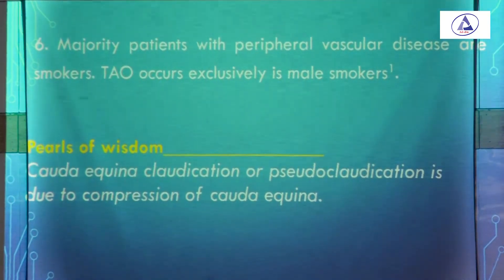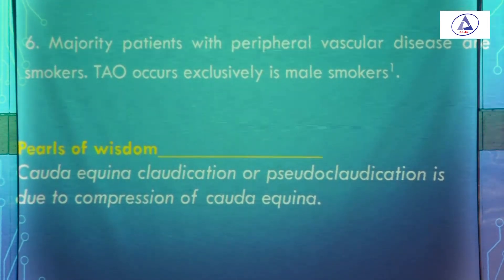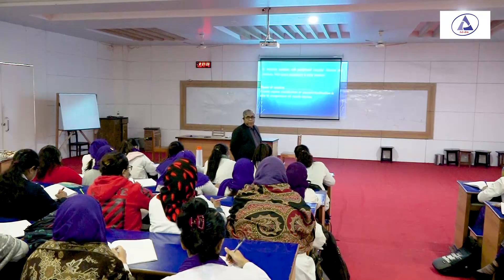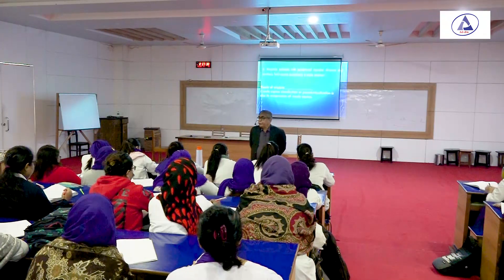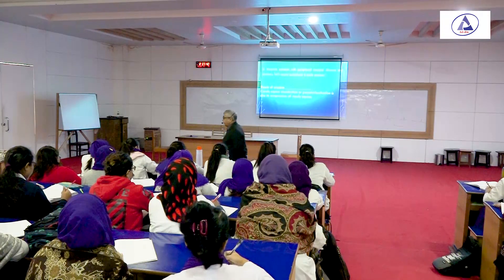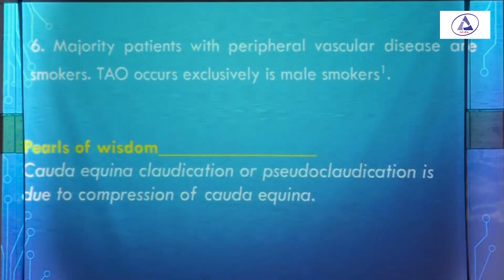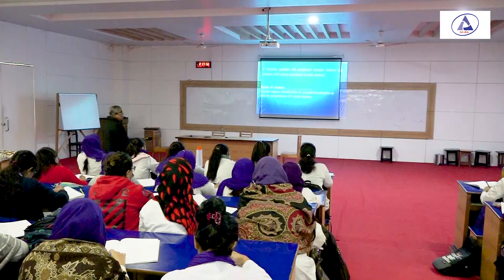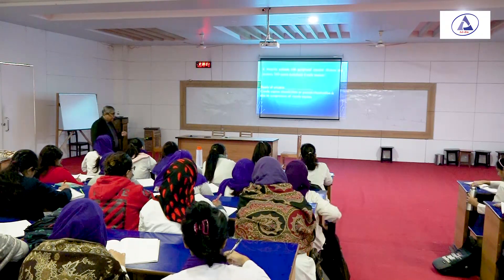Cauda equina claudication, also called pseudo-claudication, is due to compression of the cauda equina. It is not true claudication, but there may be symptoms similar to claudication. These are the signs we can get from a patient having Buerger's disease.